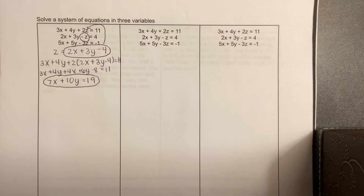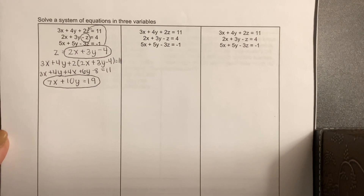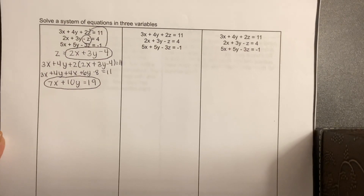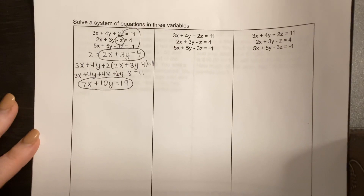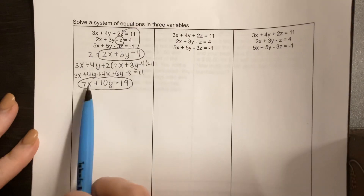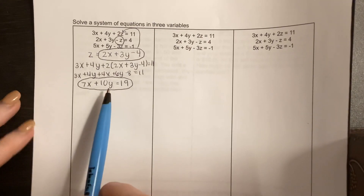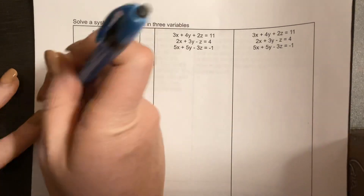Remember, your goal when you're doing a 3x3 using substitution or elimination is you're trying to create a 2x2 system, because then you can solve a 2x2 system. That is your goal the whole entire time. So we've created our first equation for our 2x2. Now we're going to take this and plug it into Z in the next equation.